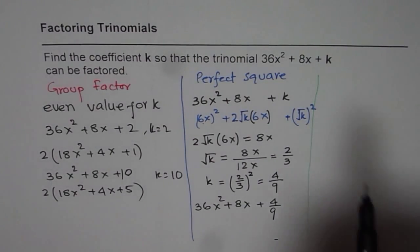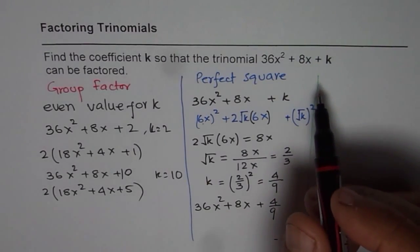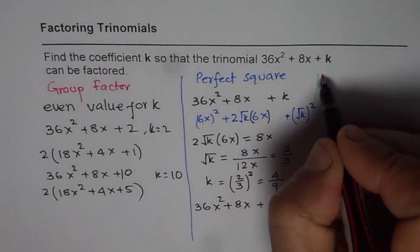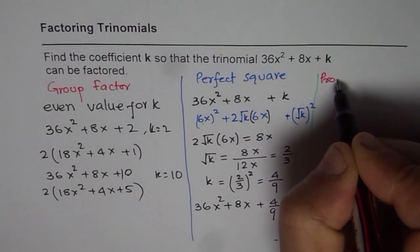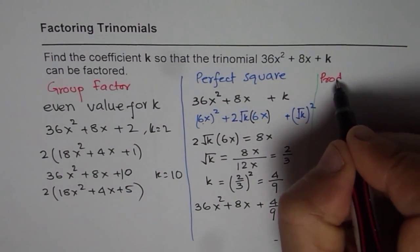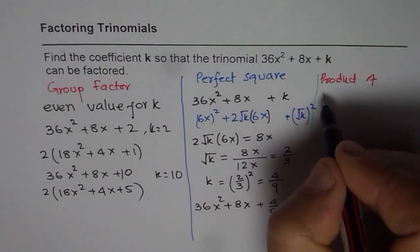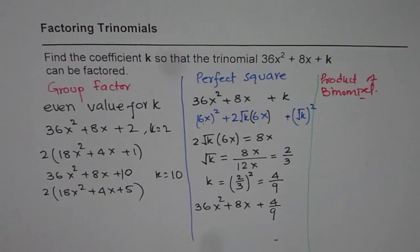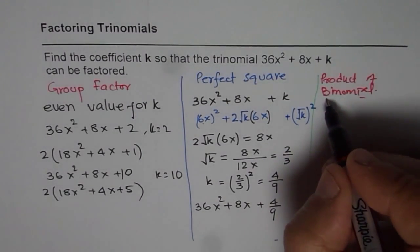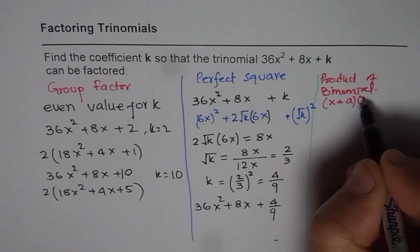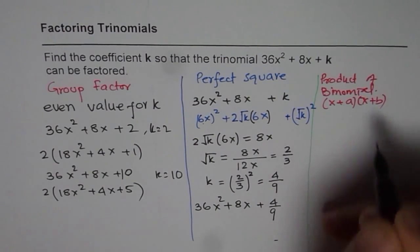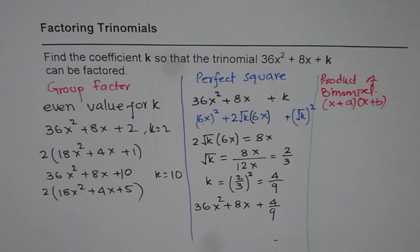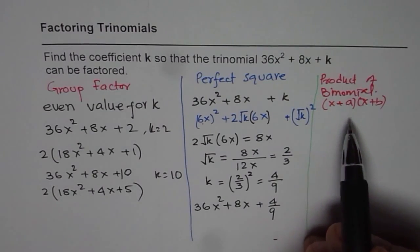Now at times, I have also seen this question as a bonus question where I write this as product of binomials. So we have a product of binomials. Now that is kind of factoring with like x + a times x + b kind of factoring. Now that could be a question and that really makes it very difficult. Now if that is the case, how to do this kind of scenario?